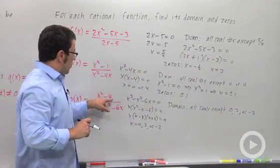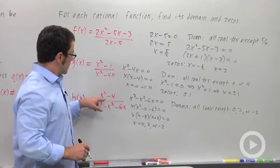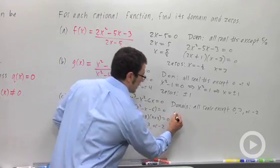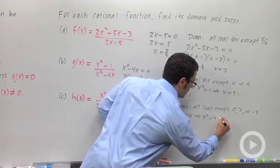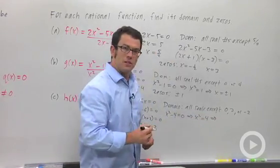And then what about the zeros of this function? Let's look at the numerator. x squared minus 4 equals 0 means x squared equals 4. So x is plus or minus 2.